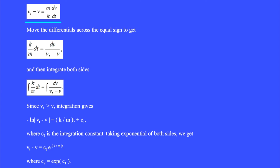Move the differentials across the equal sign to get k over m dt equals dv over vt minus v. And then integrate both sides. Since vt is greater than v in the denominator, integration gives the negative log of vt minus v equals k over mt plus c1,